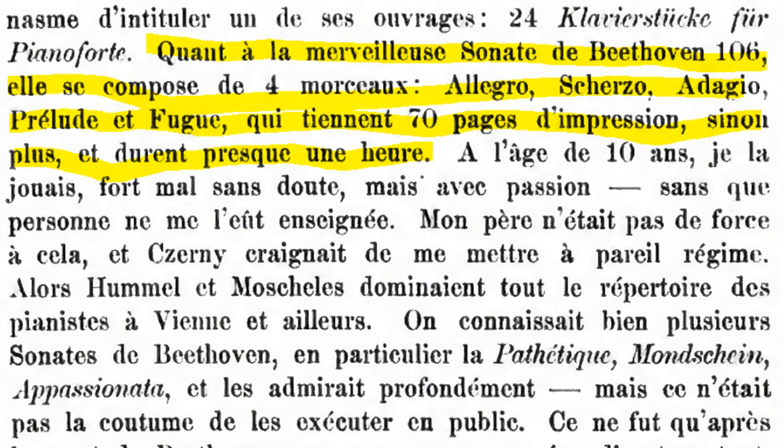So Liszt writes to Caroline von Wittgenstein about the Opus 106 that it has four parts: an allegro, a scherzo, an adagio, a prelude, and a fugue. Over 70 pages of impressions, if not more, and that will take you about one hour.